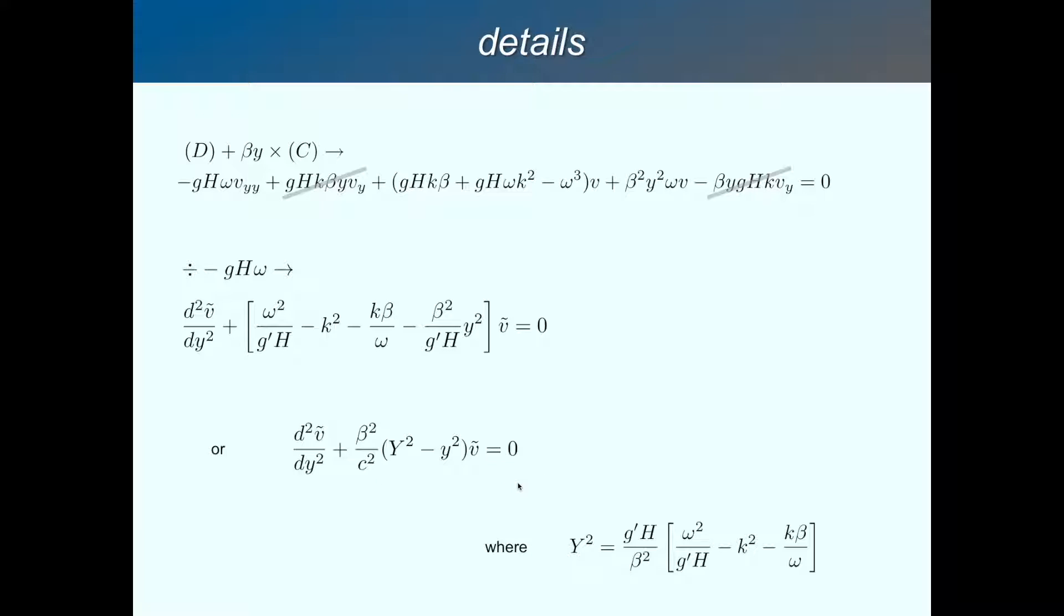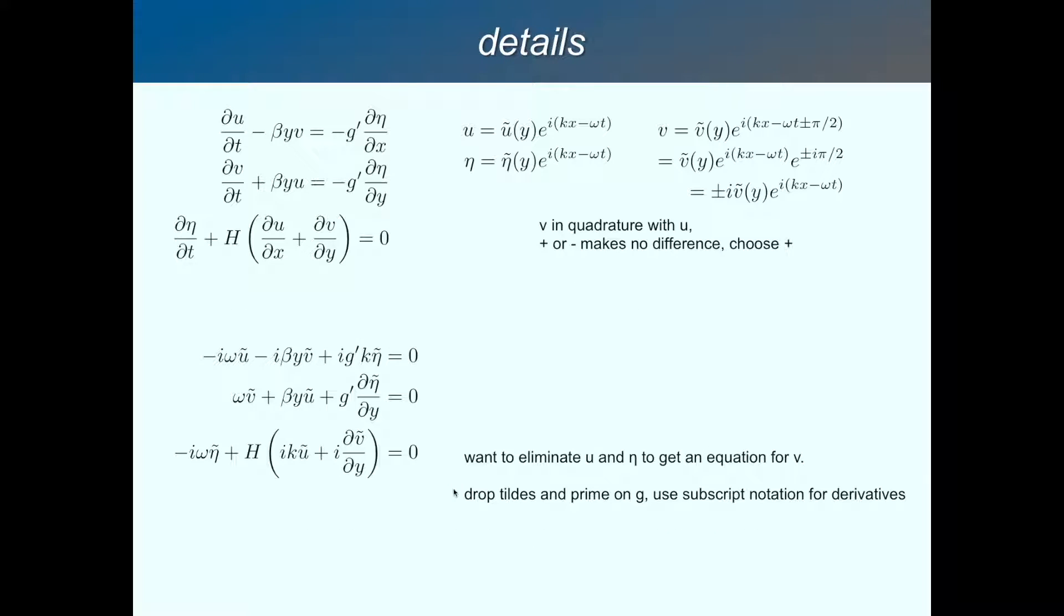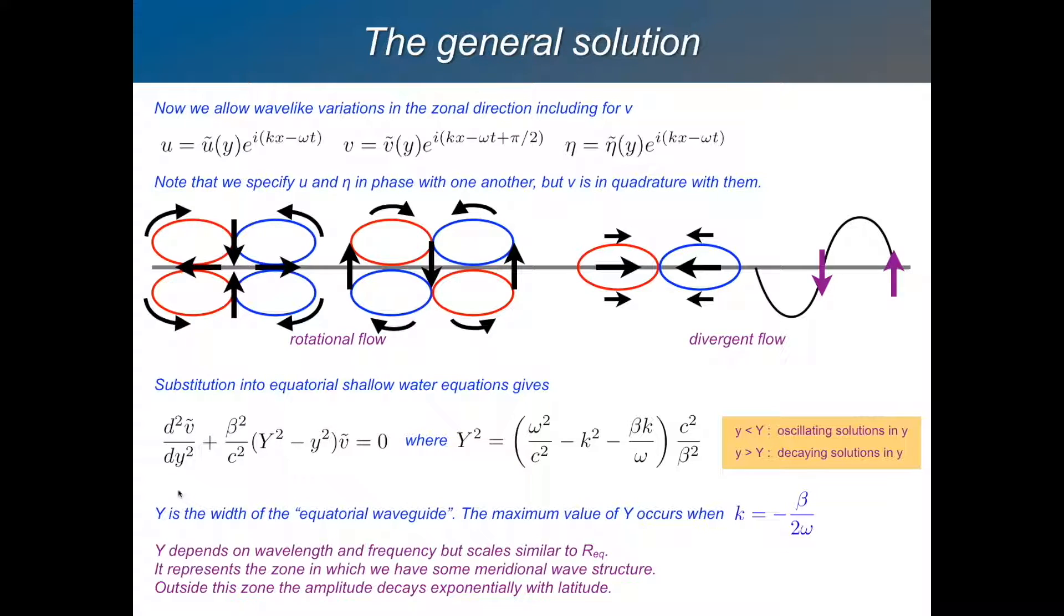So I'll just go back to the middle slide. This is the equation you get. And it's not an algebraic linear equation because you had that variable coefficient. What we have is an ordinary differential equation, and I've eliminated eta and u, and we've got an equation for v. So it's an equation for the amplitude v tilde. And it's an ordinary differential equation, second-order differential equation.